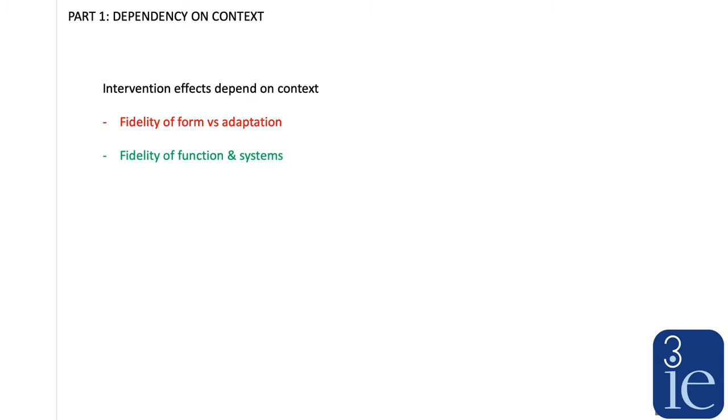Instead, it's probably better to think in terms of fidelity of function and systems — to think that interventions are part of and are engaging with complex systems that involve mostly social relationships but also structural and historical relationships. What we might want to maintain is the function that the intervention is having in the system. This brings us to a contrast that Nancy has explained elsewhere, which is the distinction between intervention-centred and context-centred thinking.